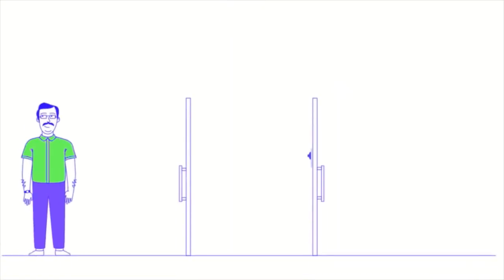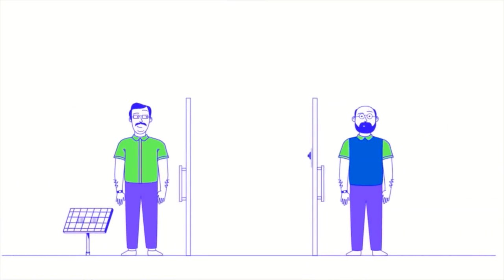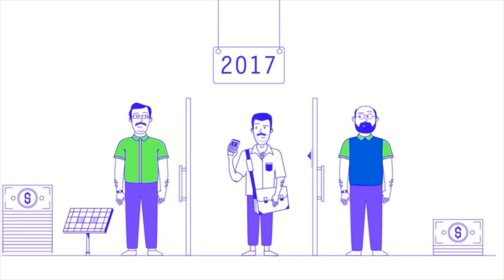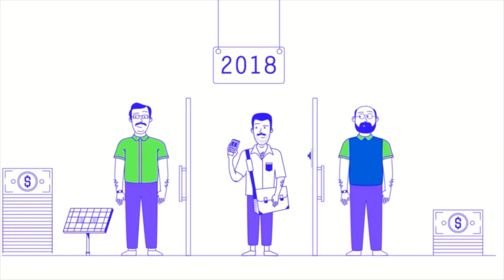Let's now compare Mustafa to his neighbor Ahmed, who felt solar wasn't for him. In the first year, Mustafa will be paying more than Ahmed. In the second year, Mustafa is still paying more, but not as much as the first year.